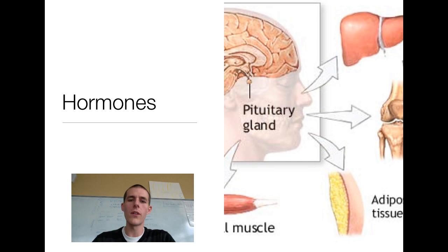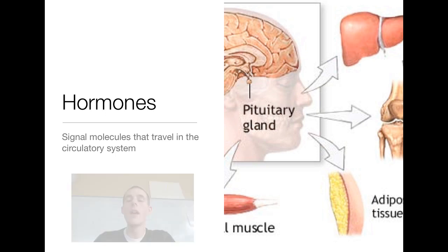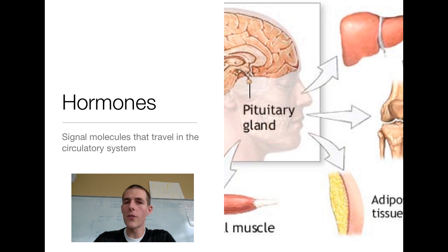Next thing is a hormone. Now, all of you hear about hormones all the time because you're teenagers. Here's how we're going to define a hormone. It's a signal molecule that travels in the circulatory system. Those local regulators don't hop into the bloodstream. They only act on the cells that are right next to them. Hormones, they're actually secreted into the bloodstream so they can travel to wherever their target cell may be.